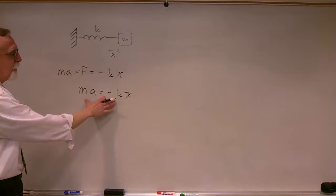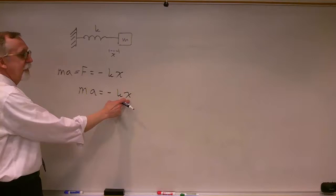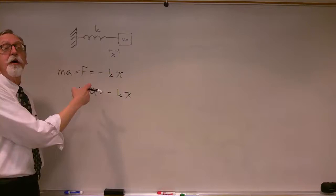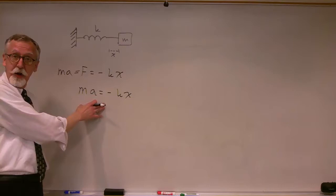Does this correspond to the equations we just derived? If we put the position as a function of time and the acceleration as a function of time that we derived for uniform circular motion, do those actually describe the motion of a mass on a spring? Let's try it.